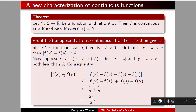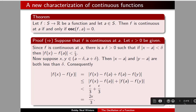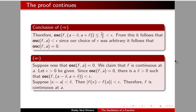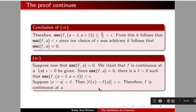Consequently, |f(x) - f(y)| equals this expression obtained by adding a clever zero, which is less than or equal to |f(x) - f(a)| + |f(a) - f(y)|. Since these are both less than ε/3, their sum is less than 2ε/3, and consequently |f(x) - f(y)| is less than ε. So the oscillation of f on (a - δ, a + δ) is less than ε, and it follows that the oscillation of f at a is less than ε. Since our choice of ε is arbitrary, the oscillation of f at a equals zero.